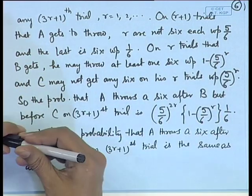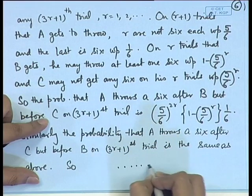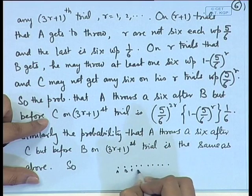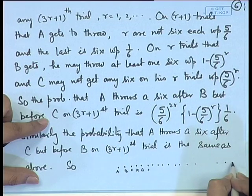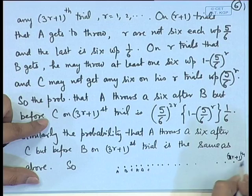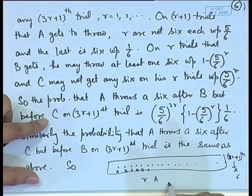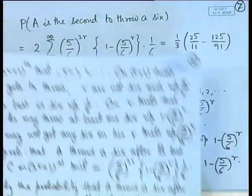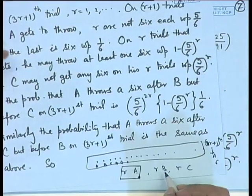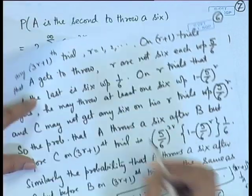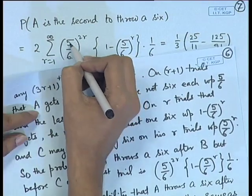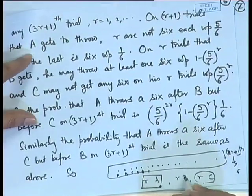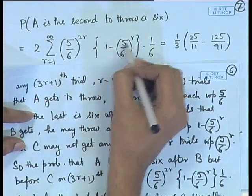The combined probability for A no 6 in R trials, C no 6 in R trials is (5/6)^(2R). On the last (3R+1)th trial, A gets a 6 with probability 1/6. So for a given R, the probability that A is second with B getting at least one 6 first is (5/6)^(2R) · (1 − (5/6)^R) · (1/6).